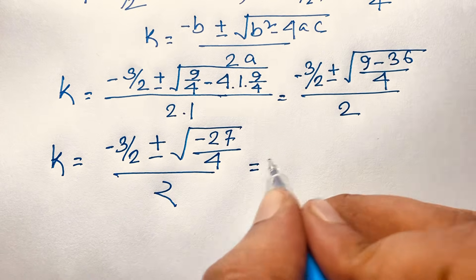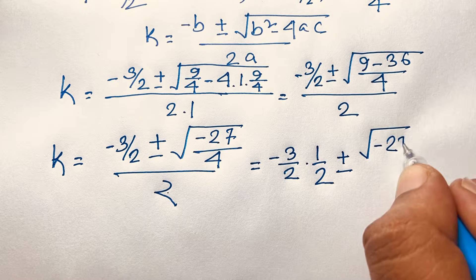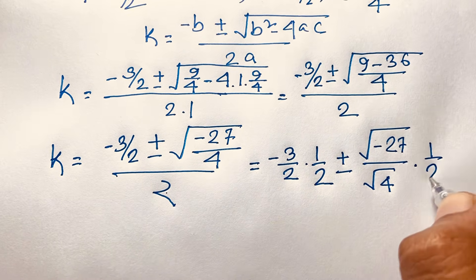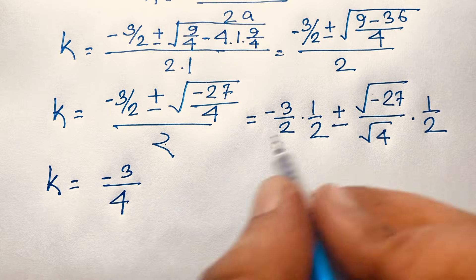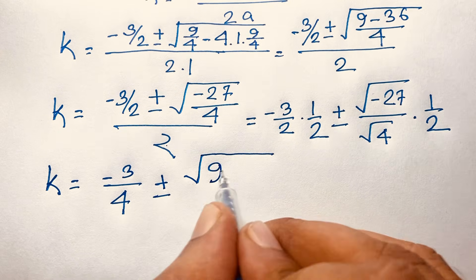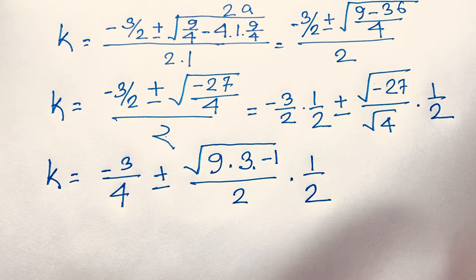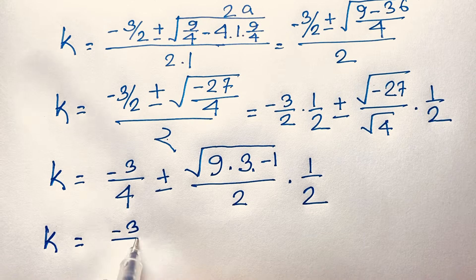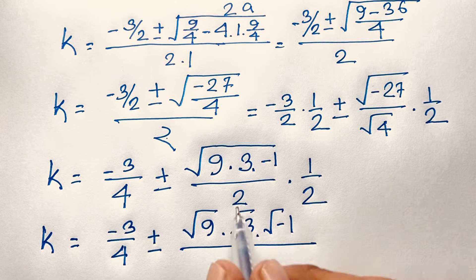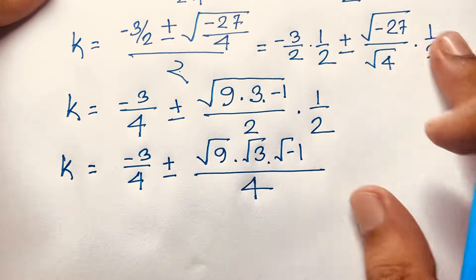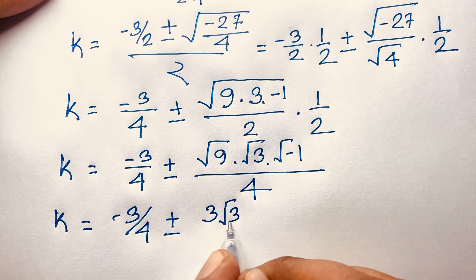Simplifying further: k = −3/4 ± (√(−27) / 4). Now √(−27) = √(9·3·(−1)) = 3√3 · i, where i = √(−1). So k = −3/4 ± (3√3 · i) / 4.